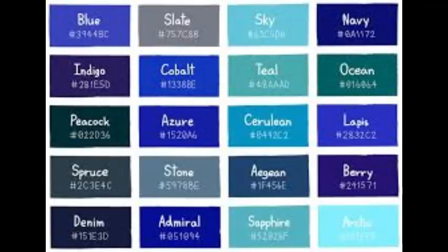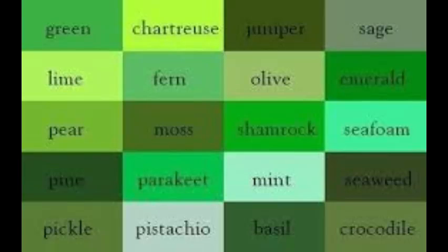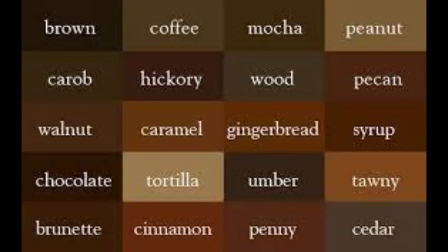Our ninth color is green — the color that's mostly associated with nature. Its shades are: green, sartros, juniper, shades, lime, fern, olive, emerald, pier, moss, samrock, seafoam, peen, parakeet, mint, seaweed, pickle, pistachio, basil, and crocodile.